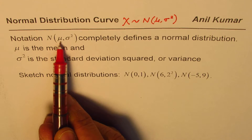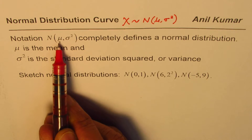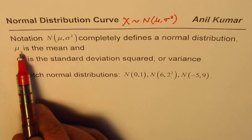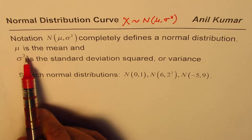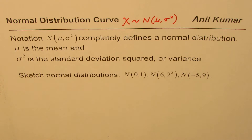The normal distribution is defined by two parameters. The first one, μ (mu), is the mean, and σ² (sigma squared) is the variance — that is, the standard deviation squared. I hope that part is very clear.